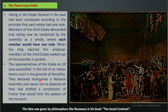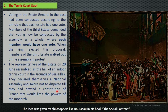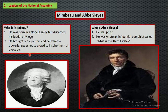On 20 June, representatives assembled in the hall of the indoor tennis court in the grounds of Versailles. They declared themselves a National Assembly and resolved not to disperse until they had made a constitution. After this, the leaders of this National Assembly tennis court meeting were Mirabeau and Abbé Sieyès. Mirabeau was born into a noble family but discarded his feudal privilege.